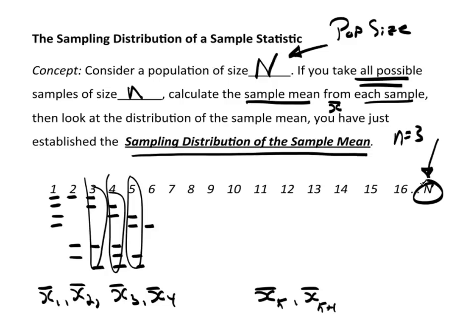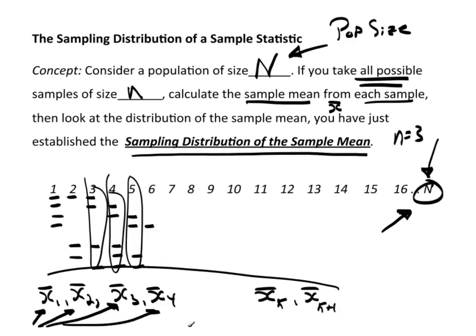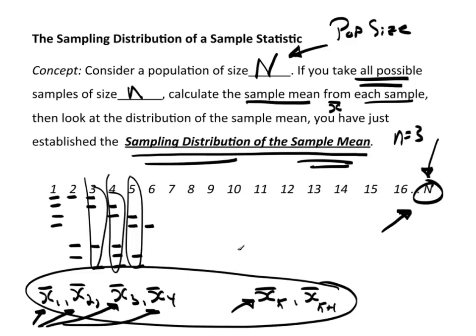Something should be very apparent here: the number of all possible combinations of three will be larger than the population size itself. So you never really do this — it doesn't make sense to actually do it in practice other than as an academic exercise with a small population. You don't have to, because the theory has already been established. The key is that in theory each of those x-bars is like a number in a bucket, and if I look at the distribution of all those x-bars, I've established the sampling distribution of the sample mean.